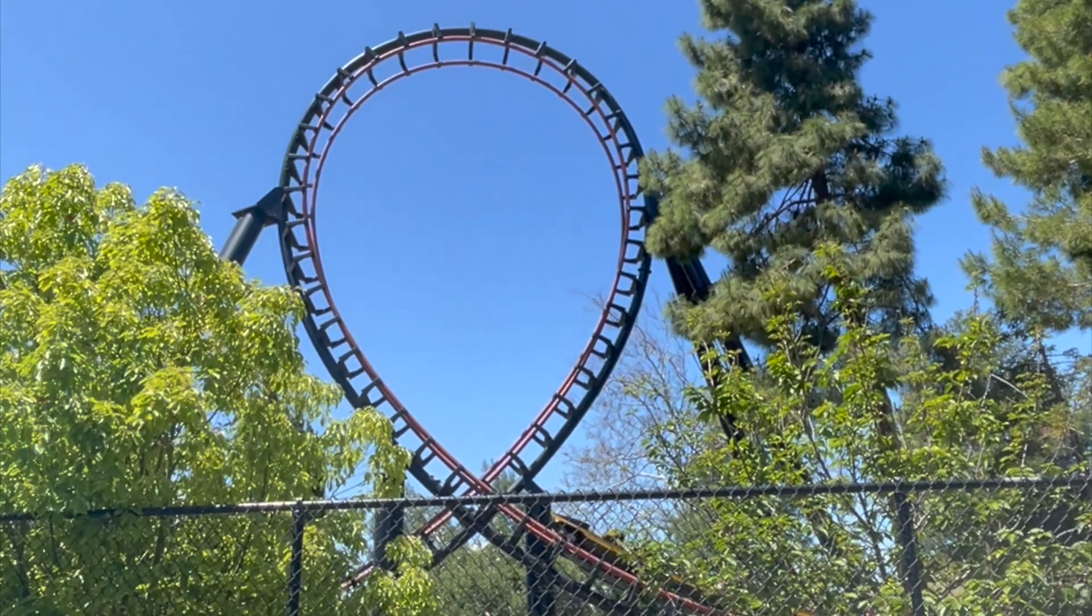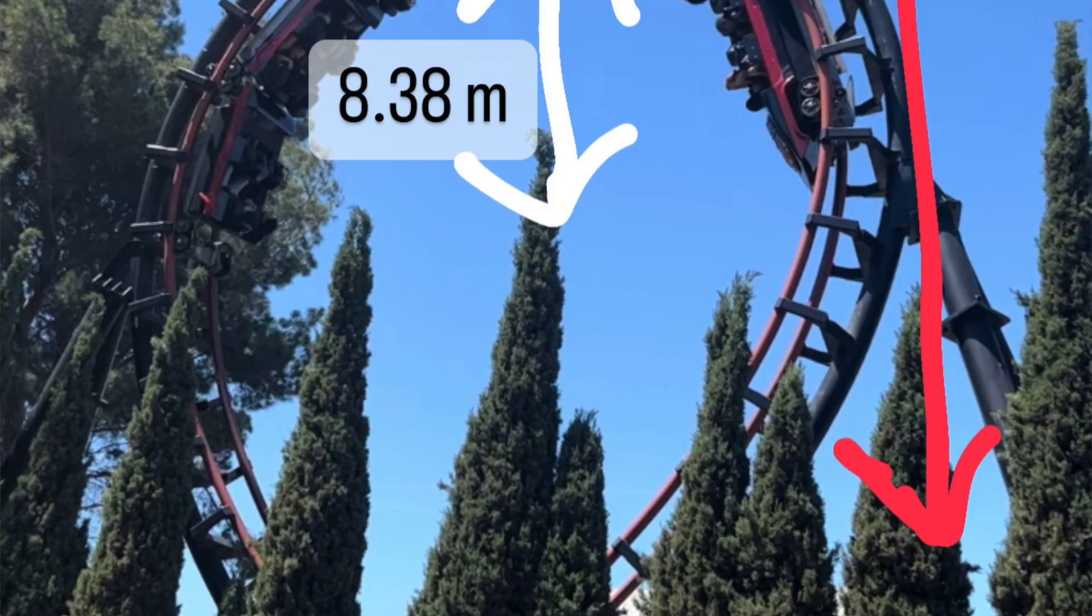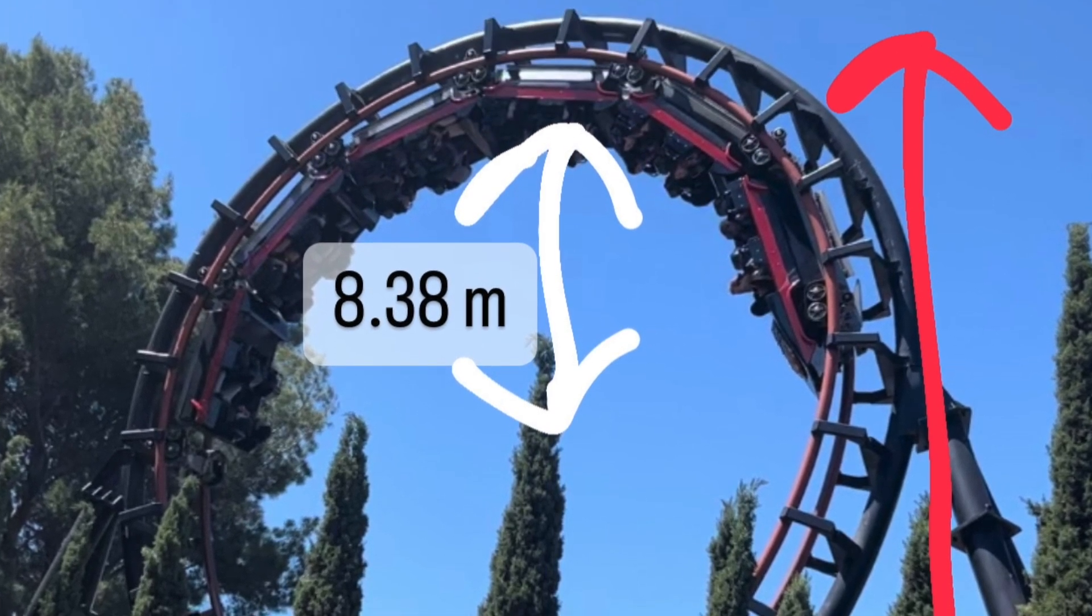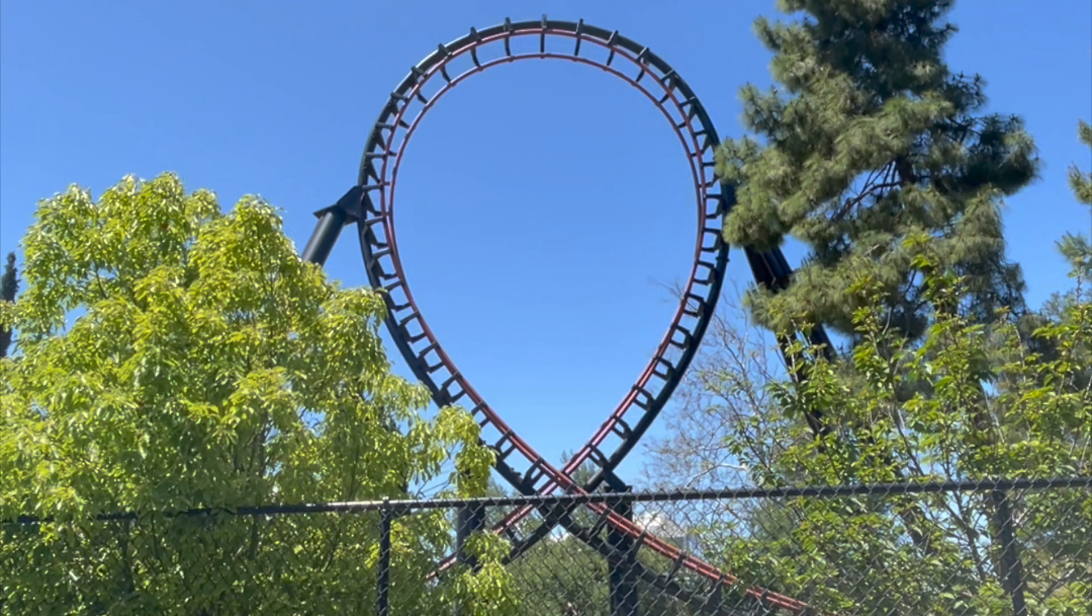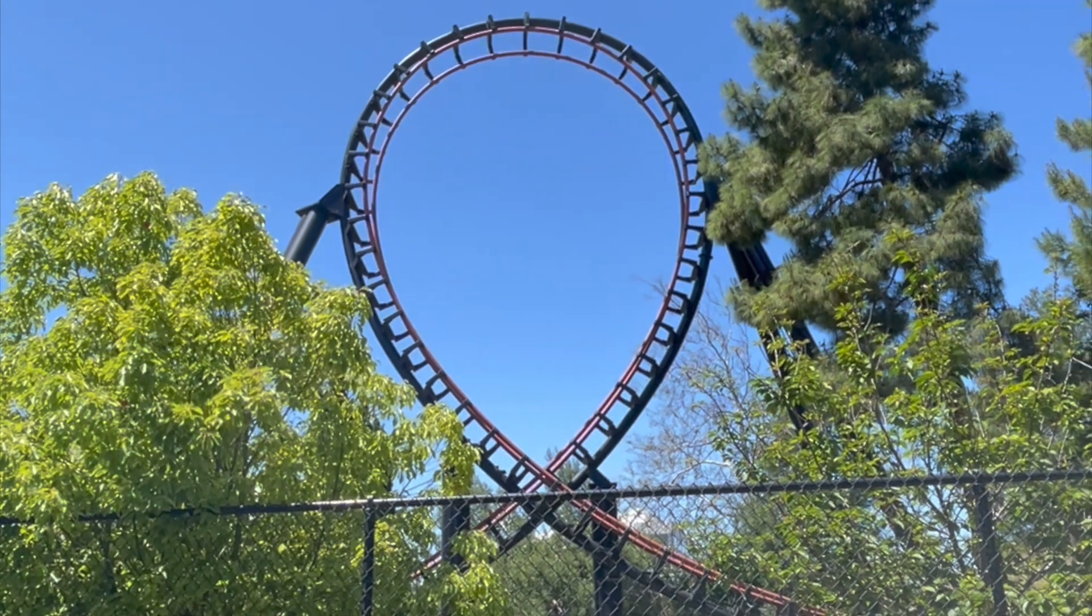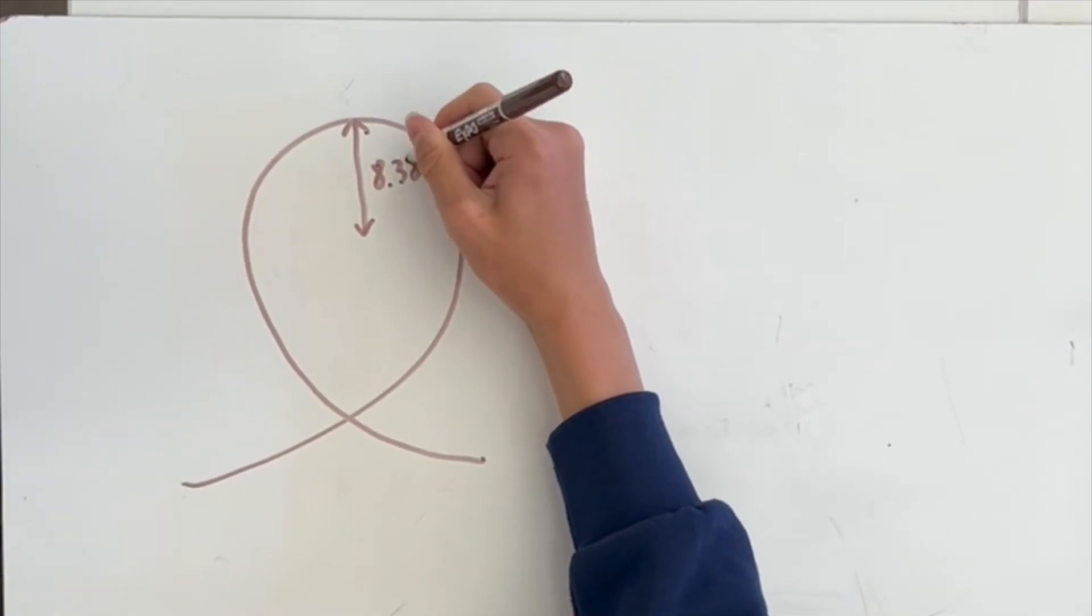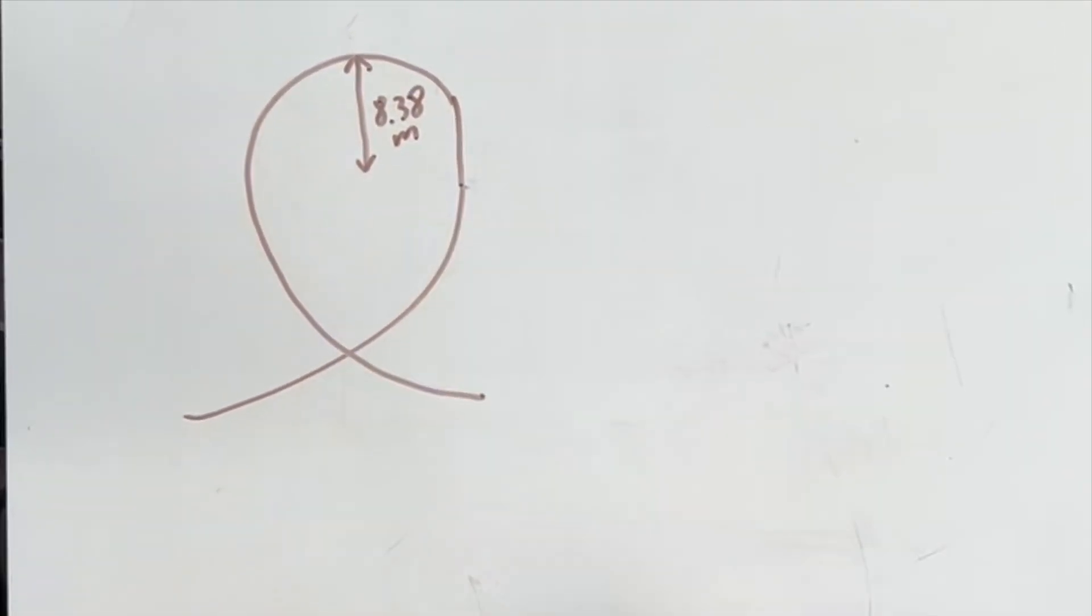Assume that the loop is a perfect circle with radius of 8.38 meters and a height of 16.76 meters. We're assuming that the cart travels in a perfect loop, and we can find the centripetal force acting on it using the speed we just calculated.